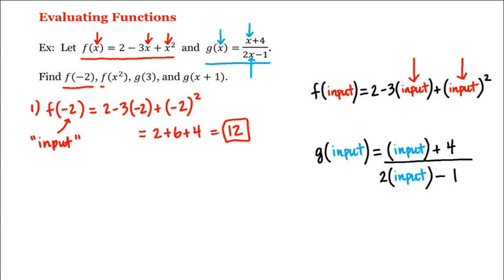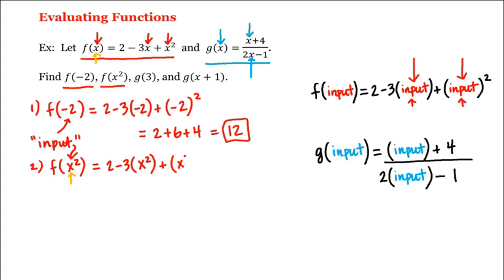Alright, what about f of x squared? Don't let it confuse you that this is a variable and moreover that it's the same variable x that we see in the definition of our function. Remember, whatever's inside these parentheses is our input, which means we need to put it in over here and here. That is, this is equal to 2 minus 3 times x squared, plus x squared quantity squared, which is equal to 2 minus 3x squared plus x to the fourth, which would be our answer to the second part.